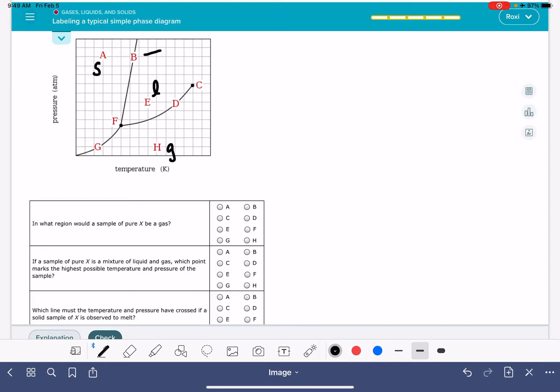The line B represents the different pressure temperature combinations where the substance is coexisting as a solid and a liquid, so this would be where it's either melting or freezing depending on which direction the temperature is changing.